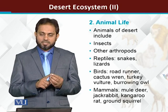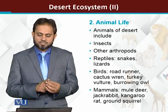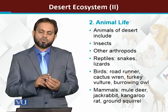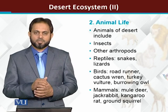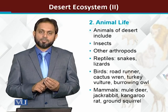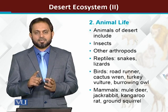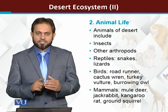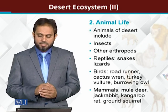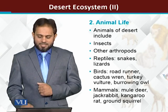Important desert birds are the roadrunners, cactus wrens, turkey vultures, burrowing owls. Among the mammals, we have the mule deer, jackrabbits, kangaroo rats, and ground squirrels. These are the important desert animals.